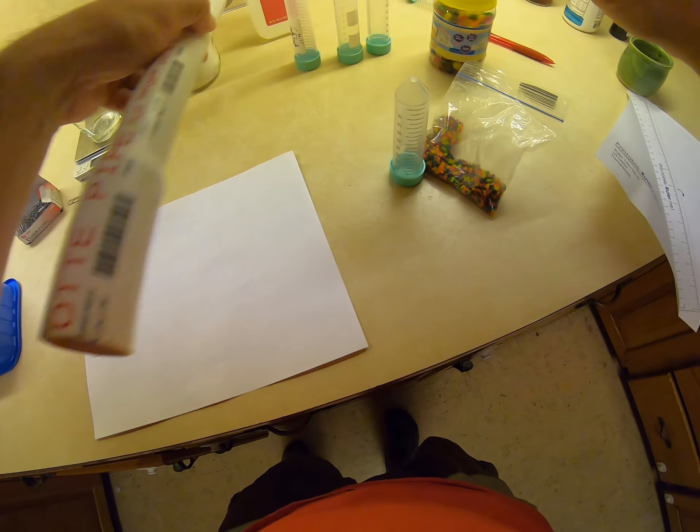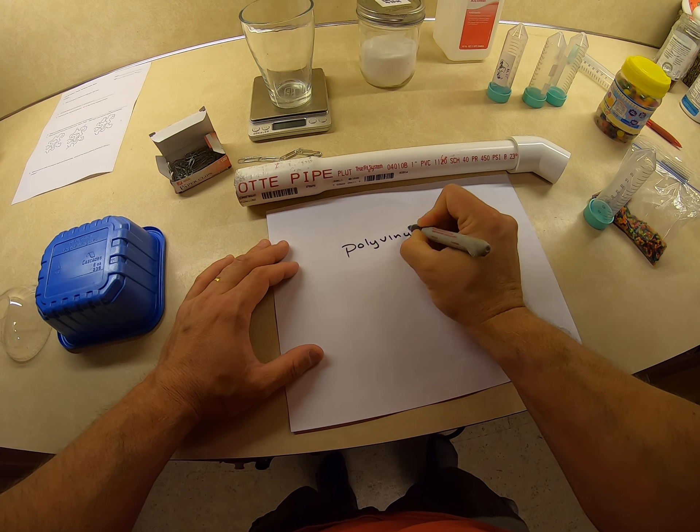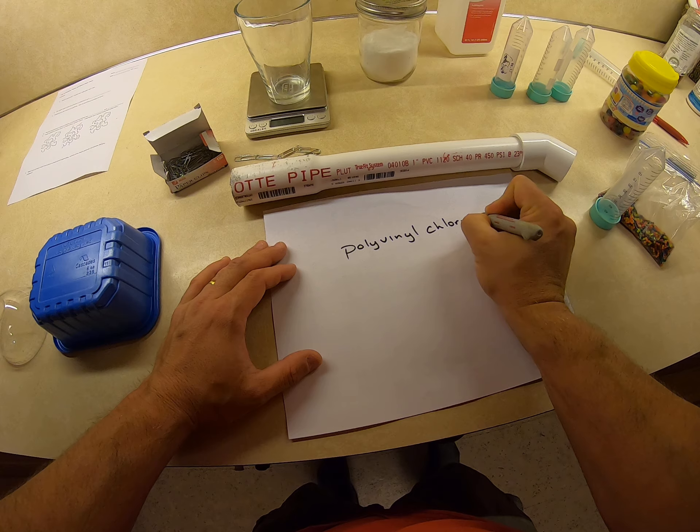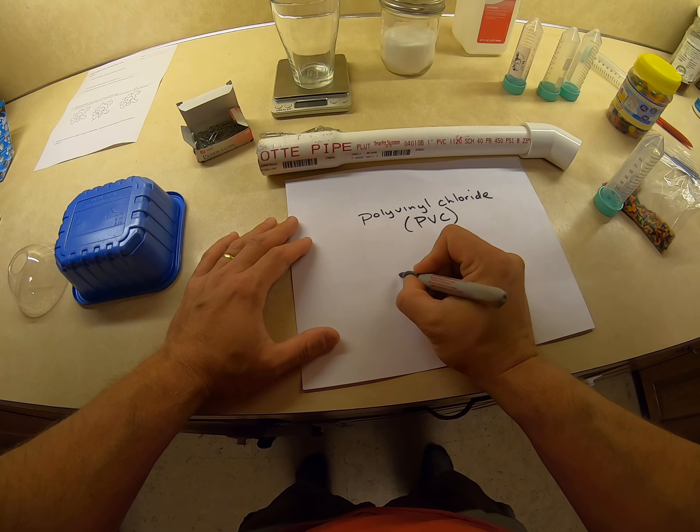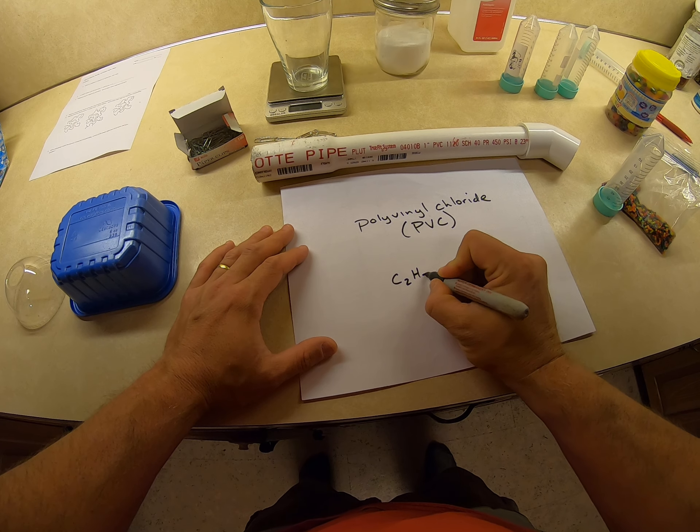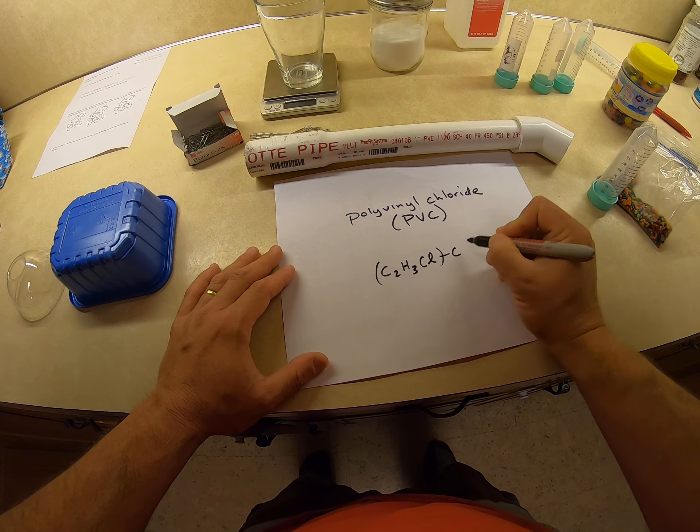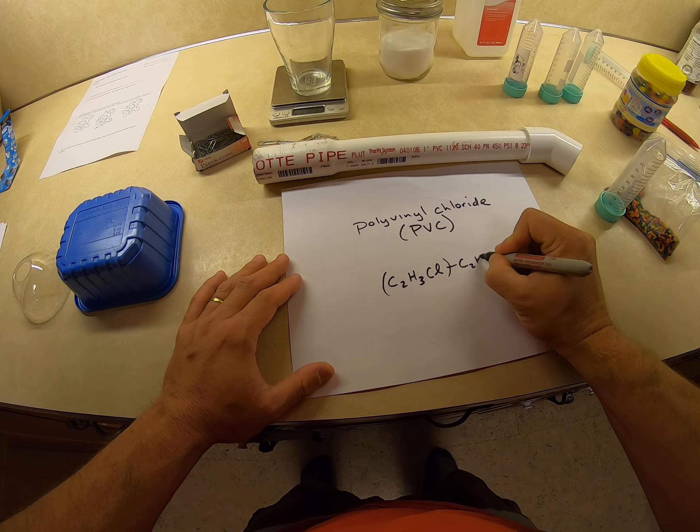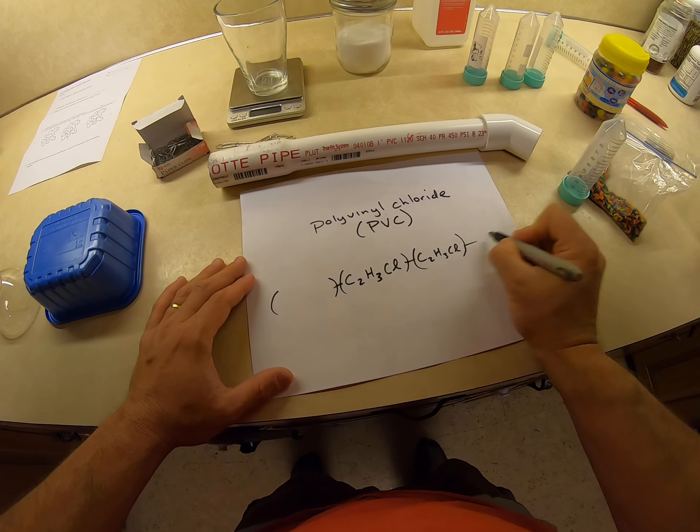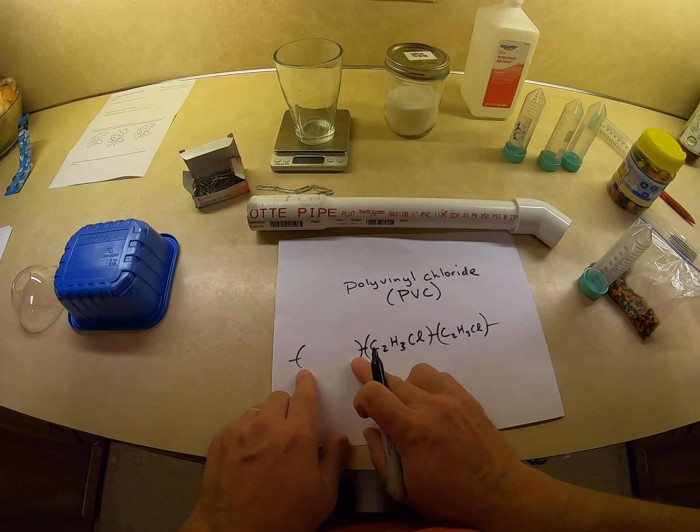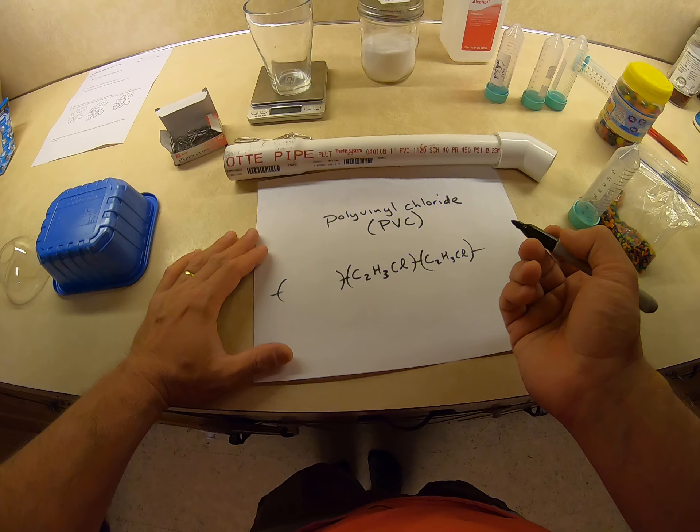PVC, for example. It's called polyvinyl chloride. And what it is, its unit is made up of carbon, hydrogen, and a chlorine. Now, you hook those together. I'm not going to write it all out. With more and more units—this was like one paper clip, second paper clip, third paper clip. You hook them all together, you get a long polymer.